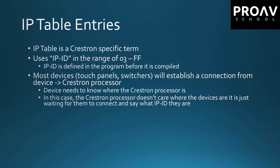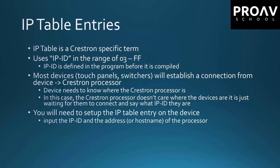So it's the touch panel that's going out and talking to the processor. In that case, the device needs to know where the Crestron processor is, but the Crestron processor itself doesn't necessarily care where the device is — it just has an open connection waiting for somebody to connect and say what their IP ID is. For example, if you have a touch panel and a processor, the touch panel would know the IP address of the processor and would also have an IP ID assigned. So when the processor gets something connecting at that IP ID, it would know it's supposed to be this specific touch panel. Because of that, in most cases you will need to set up the IP table entry on the device. When you load the code on the processor, the IP table for the processor side is loaded automatically, so you usually don't have to go in and set IP table entries on the processor itself.